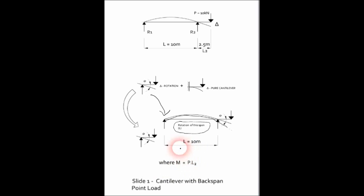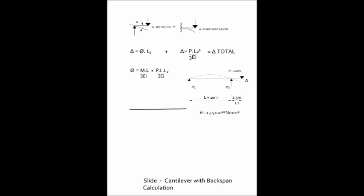Now we come to the calculation. Looking at this again, we turn to look at the deflection due to the rotation of the backspan, which is given by ML over 3EI. And M of course is p times L2, which is the cantilever span. And then we're going to look at the cantilever deflection, which is a pure cantilever calculation.